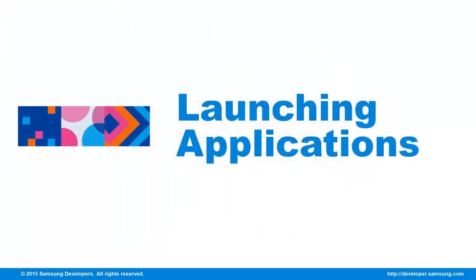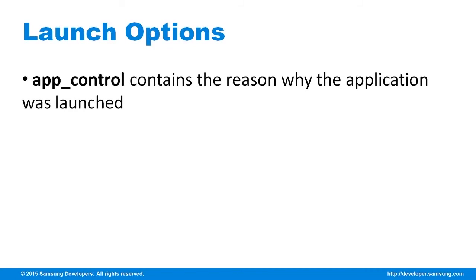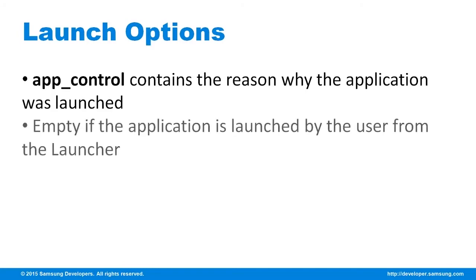Now that we know the application lifecycle, let's focus on launching an app. There's more to it than it seems. Recalling from the application states, the app control callback is involved in three states. First is that it contains the reason the application is launched. If the application is launched by the user from the launcher, the callback is empty.